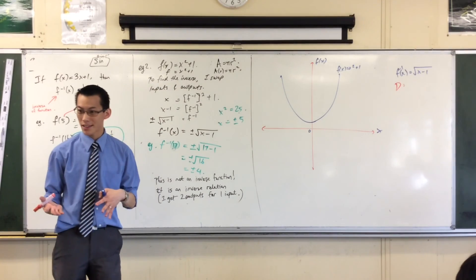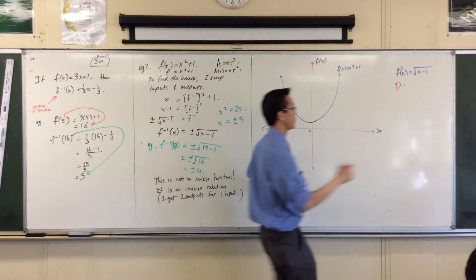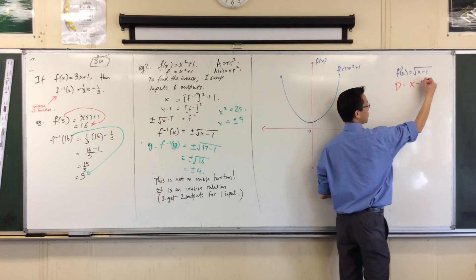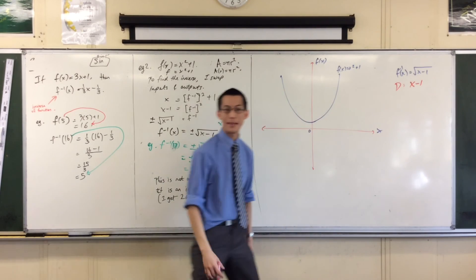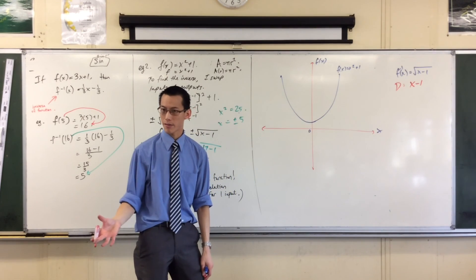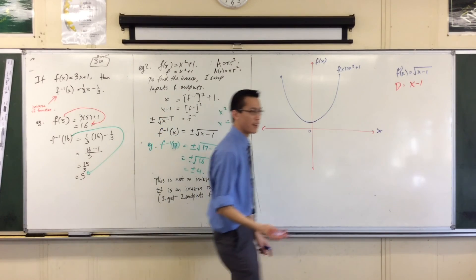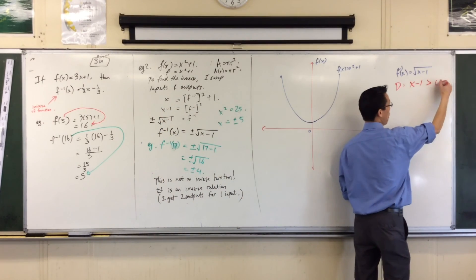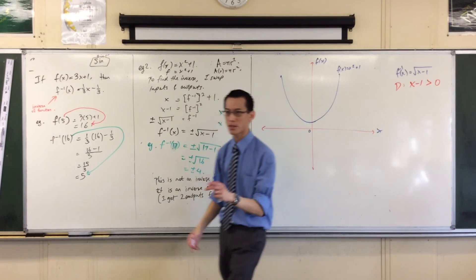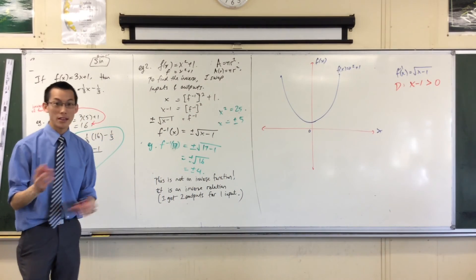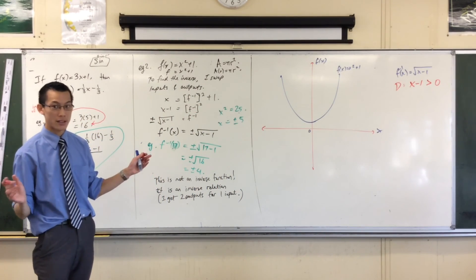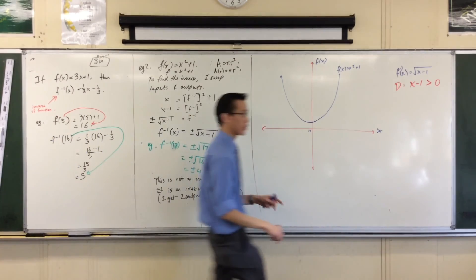So, therefore, what I want is for that thing underneath the square root, which is x minus 1, I want it to be not negative. Now, not negative sounds like positive, doesn't it? It's almost. I'm missing one number. What number I'm missing off there? Zero. Zero is fine. Zero is not negative. So, I'm going to include it.